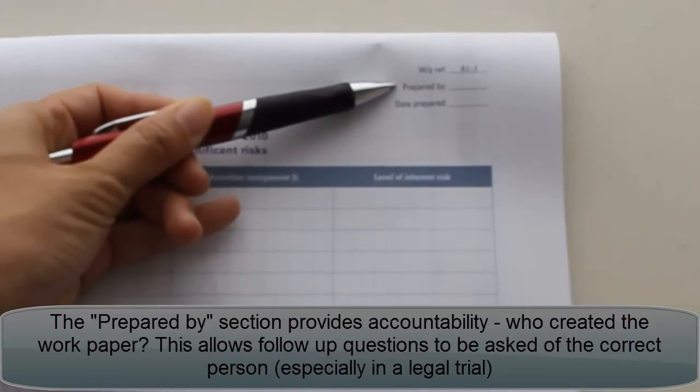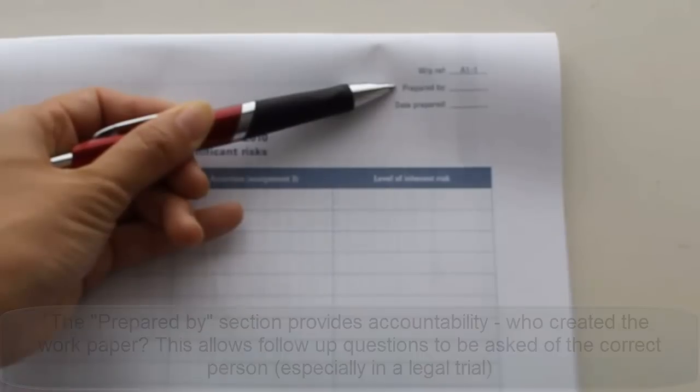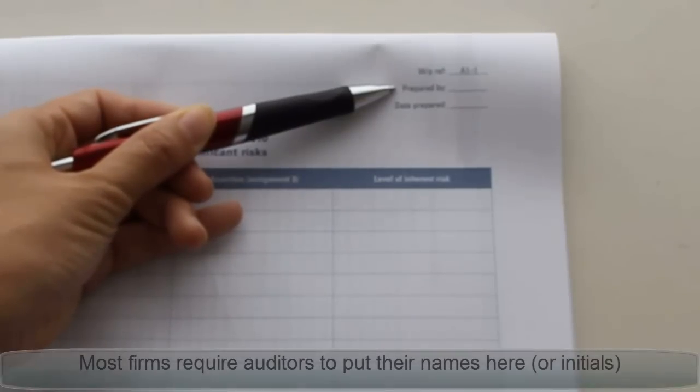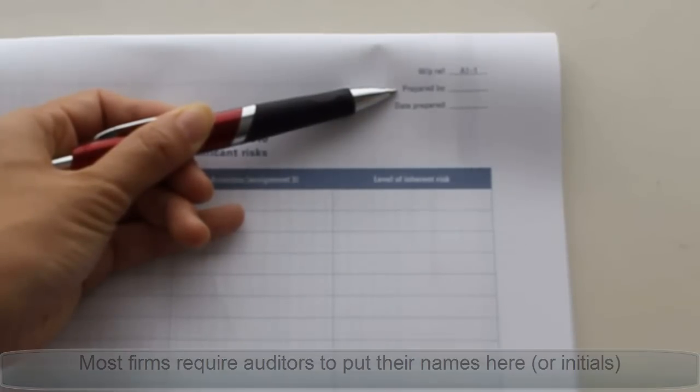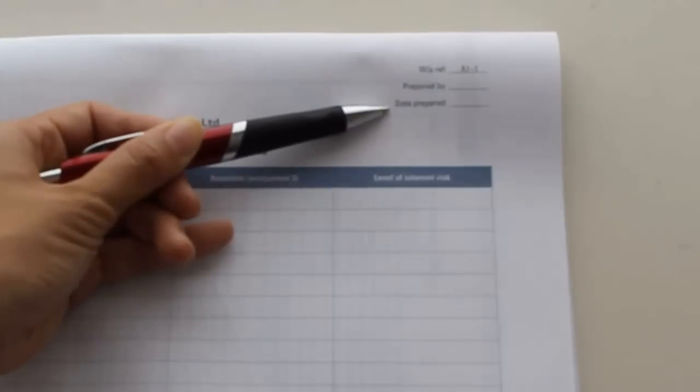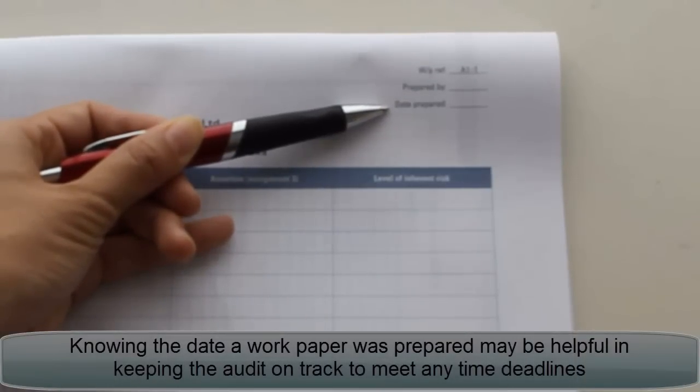The next section is the prepared by, and the prepared by is really important because it tells us who prepared the work paper. This is important from a legal perspective because if a court case does come up, the court will need to know who prepared the work paper and then the date that they did that work.